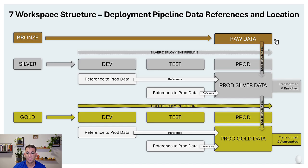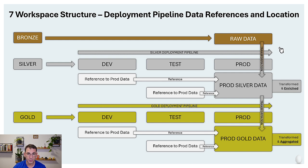We are transforming our data from the raw data to the silver data to the gold data. Between the bronze and silver layer we adjust column names, change data types, write a schema, and enrich the data by adding columns and calculations. Between the silver and gold layer we aggregate data, reducing the size of the data model and making it more consumable for business users. Self-service analysts may prefer to serve themselves from the silver layer, which has a more detailed data model.